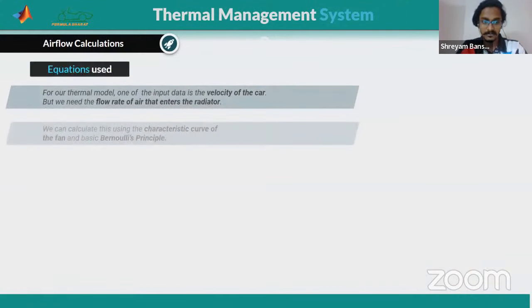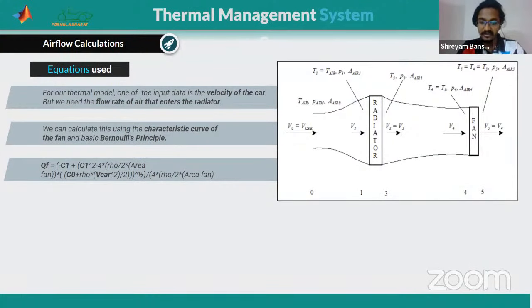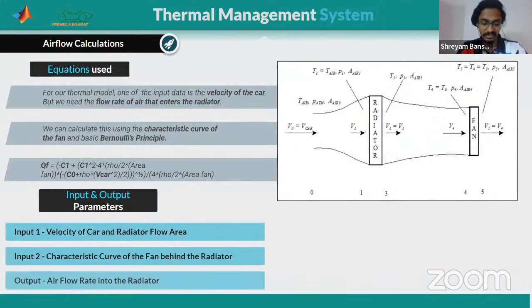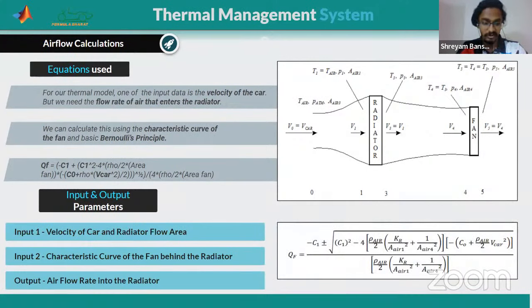For calculating air flow around our radiator and fan — the radiator is positioned on the side of the vehicle — we used Bernoulli's equations and continuity equations to calculate velocity in front of the radiator. There are five different locations at which we need to calculate the velocity. Taking the characteristic curve of the fan into consideration and calculating the flow rate inside the side duct, we calculated the flow rate around the radiator. Inputs include vehicle velocity, radiator flow rate, flow area, and the characteristic curve of the fan behind the radiator. The output was air flow rate into the radiator.